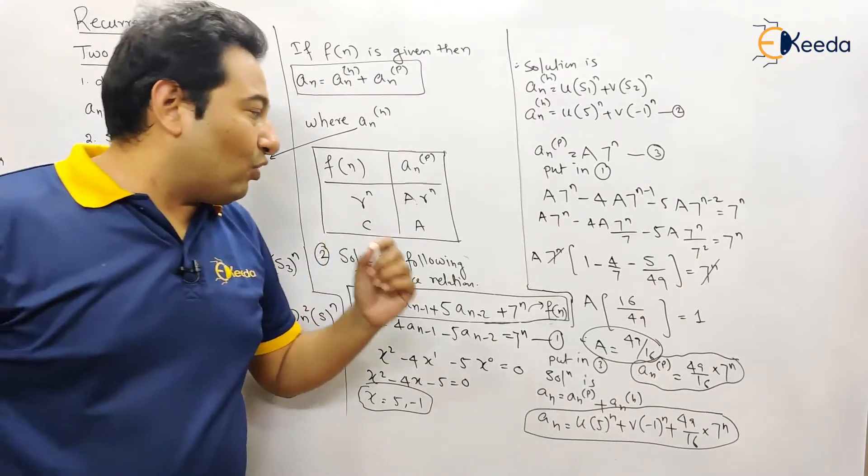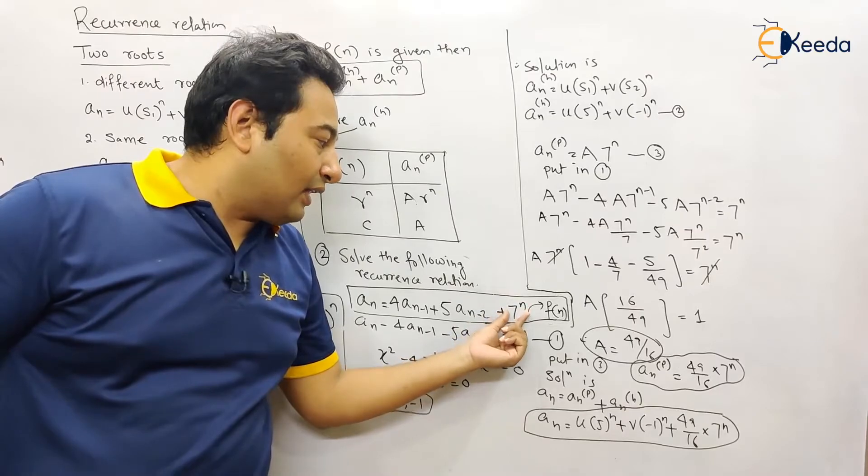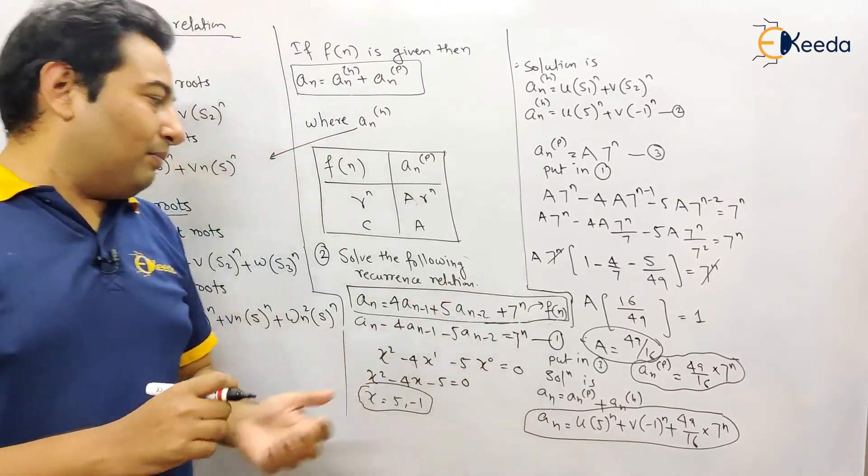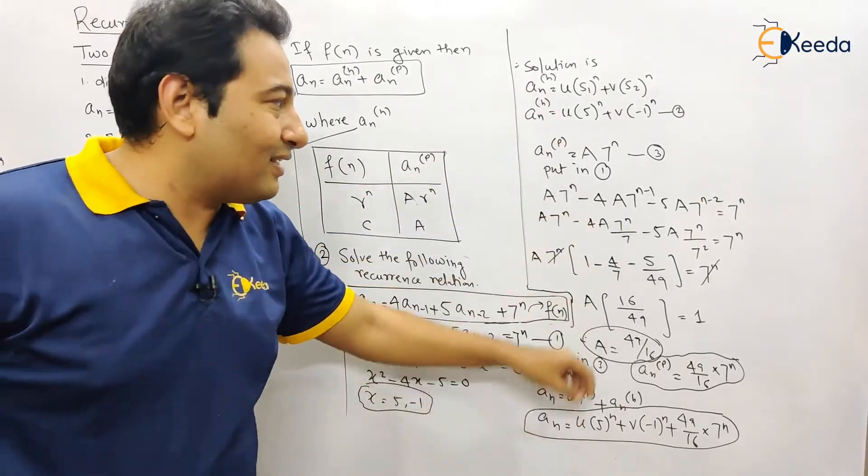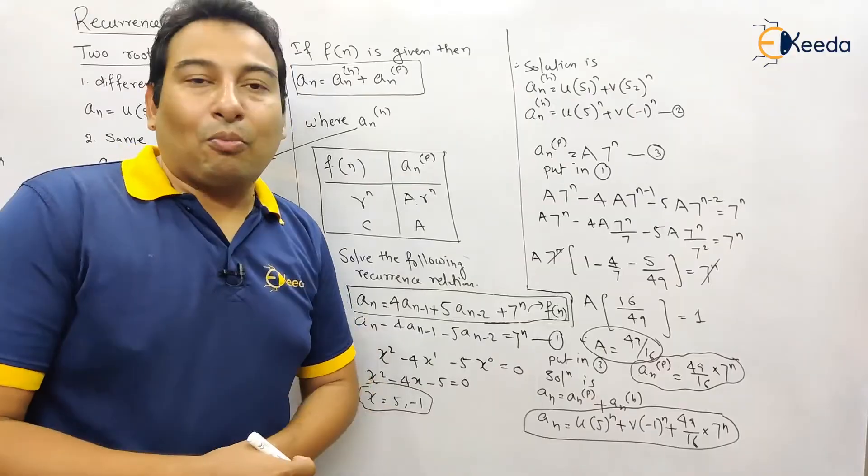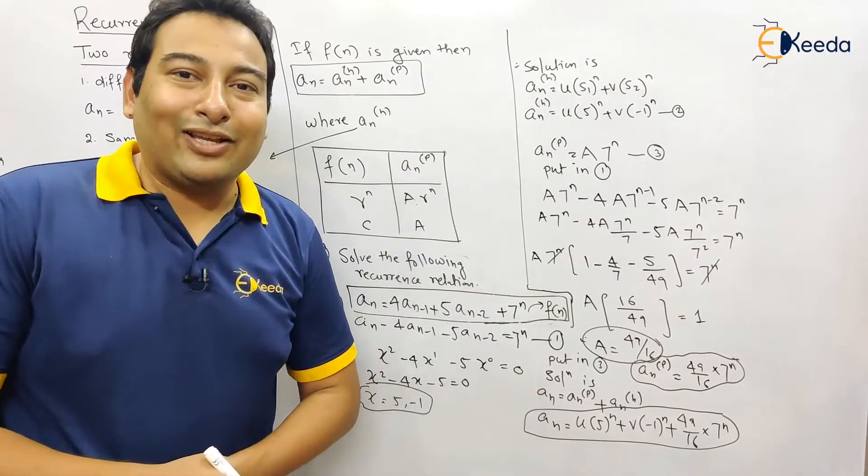So what was the difference? The difference was here, there was f of n present in the problem. So because of that there were few changes. So remember the procedure and you can easily manage this type of problem. Hope you understood. We're done with it. Thank you.